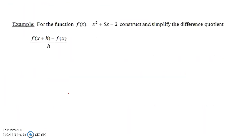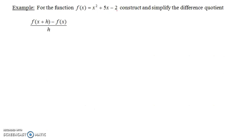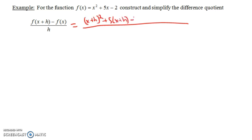Sometimes your difference quotient will end up having x's or h's in it, but in this case it was just a constant since we had a linear function. Let's do one more example. For the function f of x equals x squared plus 5x minus 2, construct and simplify the difference quotient. Now f of x plus h is going to be (x plus h) squared plus 5 times (x plus h) minus 2 — we've taken the formula for f of x and replaced the x's with (x plus h). And then minus f of x, which is (x squared plus 5x minus 2) in parentheses, all over h.